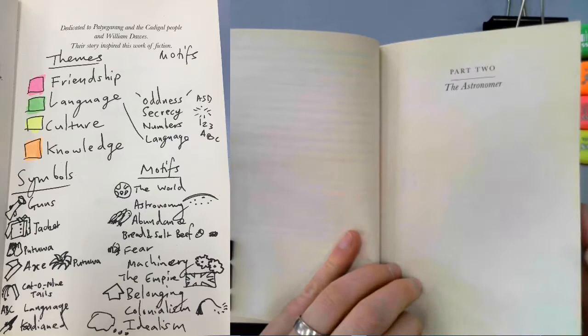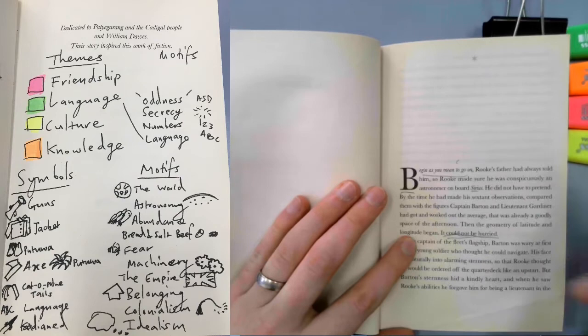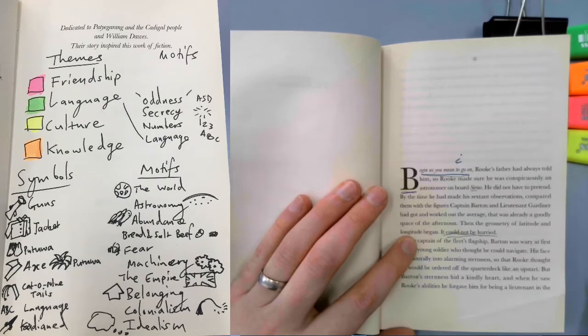Hello lovely people. This is part two of Kate Grenville's The Lieutenant. I'm reading The Astronomer. So part two, The Astronomer, is where we're kicking off. And of course we start, as ever, with Begin As You Mean To Go On, which is italics and also language.